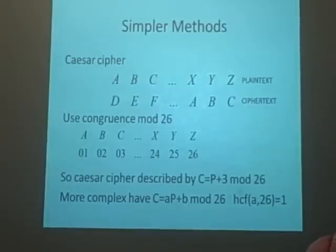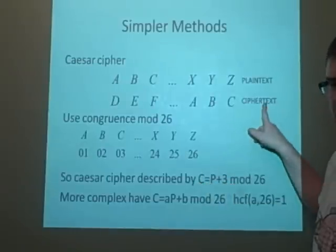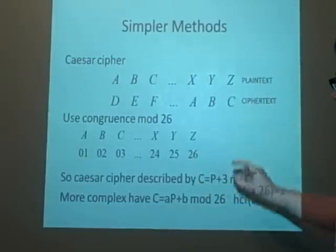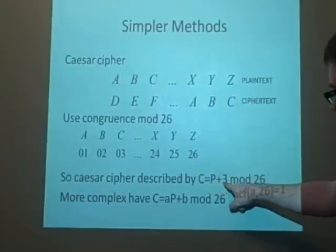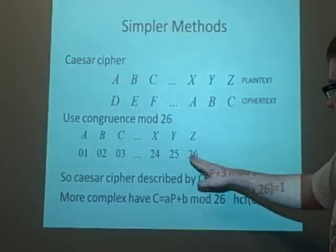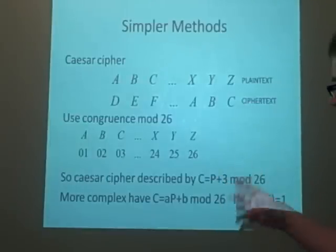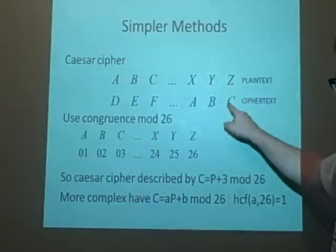So if we were going to describe this Caesar cipher above in terms of modulo 26, then if we had c as our cipher text and p as our plain text, then the cipher text is the plain text plus 3 modulo 26. So here at the z we're adding 3, which is 29 modulo 26, which is 3, which is c.